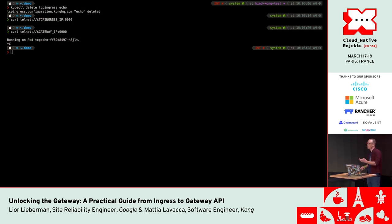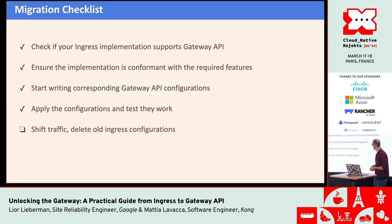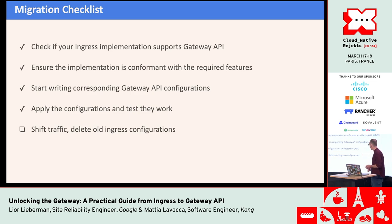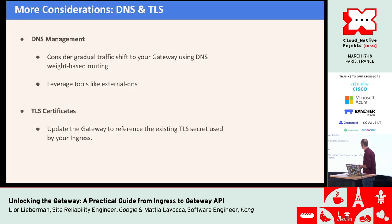At this point we have both the TCP ingress and the Gateway API configurations working in parallel, pointing to the same backend. The next step is to delete the TCP ingress and verify everything still works. Curling the TCP ingress IP on port 9000 no longer works, but curling the gateway IP on port 9000 works as expected. The TCP ingress is deleted, the Gateway API resources are in place, and the migration is completed. Back to Lior for the last step.